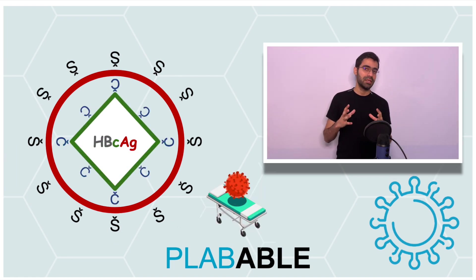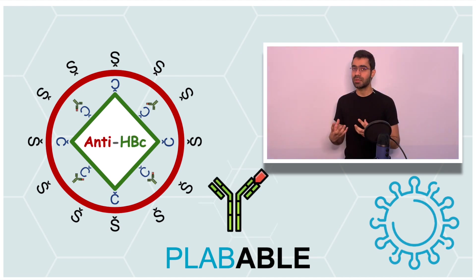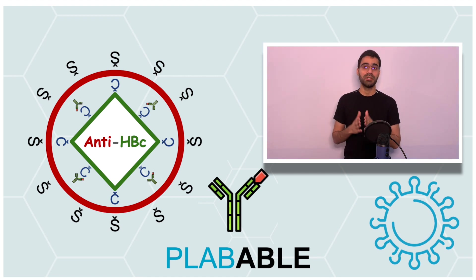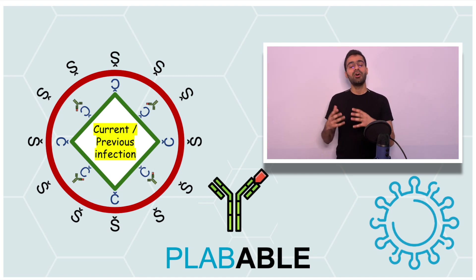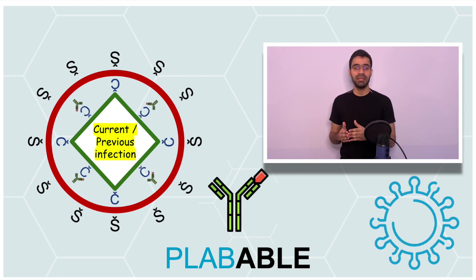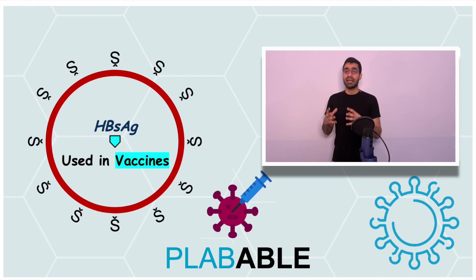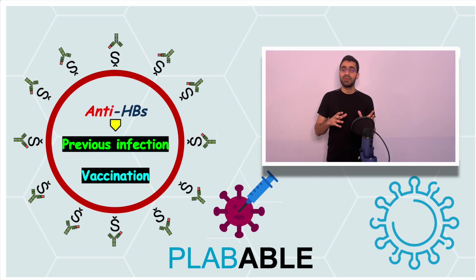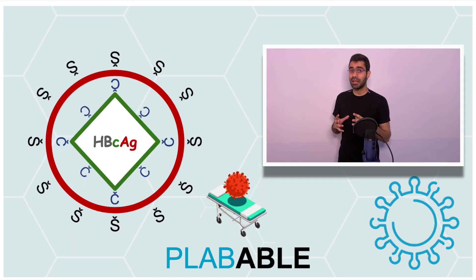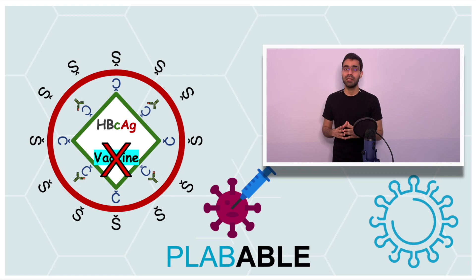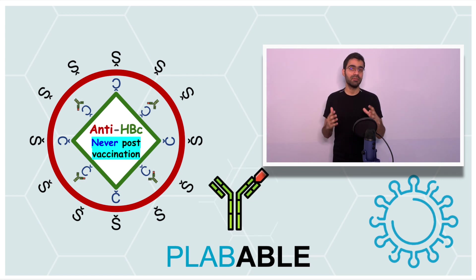What you see on the inside is the hepatitis B core. The antibodies produced against this are anti-HBc, or hepatitis B core antibodies. These also persist for life and indicate either an ongoing or a previous infection. IgM anti-HBc indicates a recent infection, and IgG anti-HBc indicates a chronic infection. Importantly, hepatitis B core antigens are not used in making vaccines, so anti-HBc positive always indicates infection or recovery from infection, never vaccination.